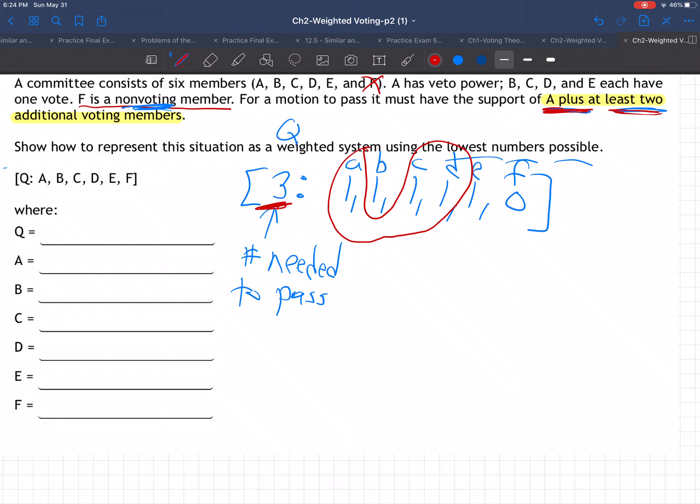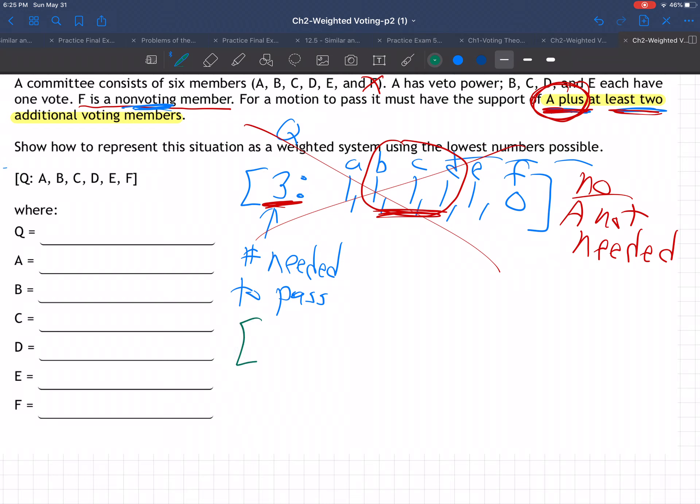So what's wrong with, why isn't this the answer? You see it, don't you? What if just B, C, D without A? That would be three votes, and that would be enough to pass, and that's not supposed to be, right? You have to have A. It said A plus two others. This would be a way of not needing A. So this is wrong. No, A would not be needed in this situation. So that's wrong. That's not a valid answer. That doesn't fit the word.